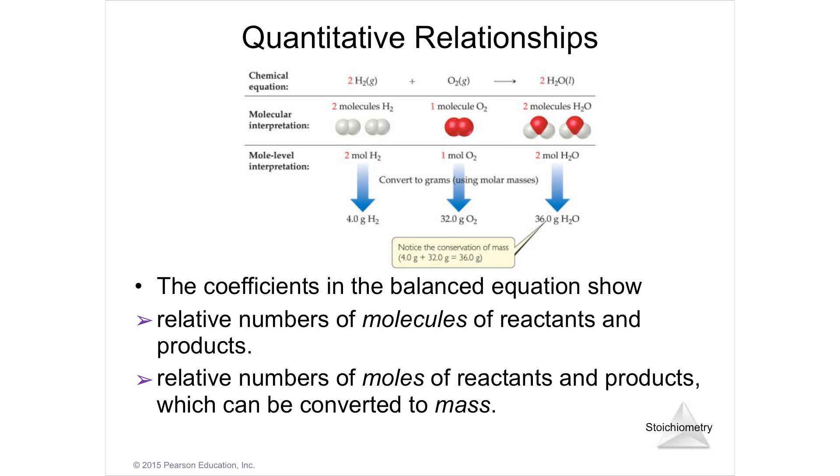You're looking at the balanced equation not just in terms of molecules, but in terms of moles. It's a 2 mole to 1 mole to 2 mole relationship. And then once I have moles, I can go through the molar mass that I add up on the periodic table, and from there, I'm able to get grams if I have grams.